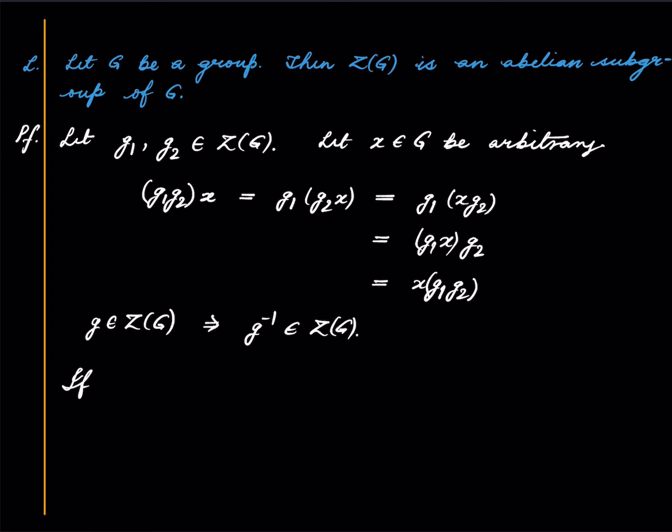Well that's very clear because if g1 and g2 are in the center of G then we want to show that they commute. That's what an abelian group is. So if g1 and g2 are in Z of G then think of g1 being in Z of G and g2 being just some element of G. Since g1 is in the center it commutes with everything in G so in particular we get that.